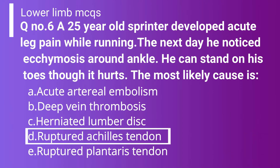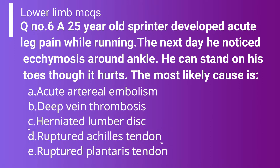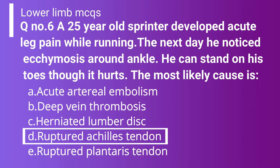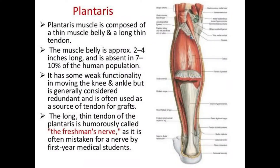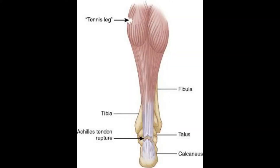The correct answer is Option D — ruptured Achilles tendon — because there is local ecchymosis favoring the insertion of the Achilles tendon. The other options are false: in acute arterial embolism there are other symptoms such as absent pulse and pallor; in deep vein thrombosis there is tenderness throughout the whole leg, not just around the ankle; and in herniated lumbar disc there is pain radiating from the back along the posterior thigh.